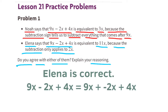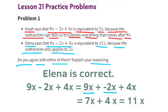I agree with Elena because 9x minus 2x plus 4x is the same thing as 9x and a negative 2x plus 4x. 9x minus 2x is 7x, and 7x plus 4x is 11x. Since Elena is correct, I agree with Elena.